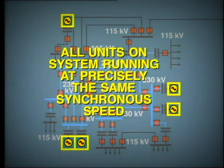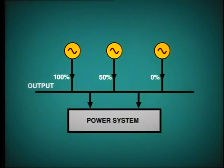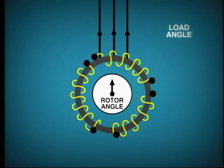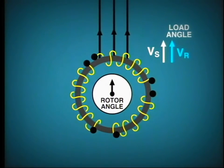Now remember, all of the units which are connected to the power system are running at precisely the same synchronous speed. This is obvious because they are synchronized together and the frequency is precisely the same at all points of the system. So how is it, then, that one unit may operate at, say, 100% capacity and another at 50%? Doesn't this mean that the unit with the greatest load is running faster? Well, beware of this trick question — of course it cannot run faster because the units are all synchronized together. So how does it put out more load? The answer is in the load angle or power angle. This is the relative angle between the induced voltage due to the rotor and the terminal voltage, which is dependent upon the power system. This diagrammatic representation shows the situation at zero load.